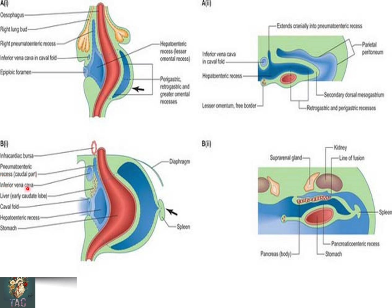This is also called the superior recess of the omental bursa — also called the pneumoenteric recess. In this diagram you can also see the area where the liver has started to develop, the position of the inferior vena cava, and the infracardial bursa. This is the stomach which is going to develop, and these are the different recesses of the lesser omental bursa which are forming here — the perigastric, retrogastric, and greater omental recesses.